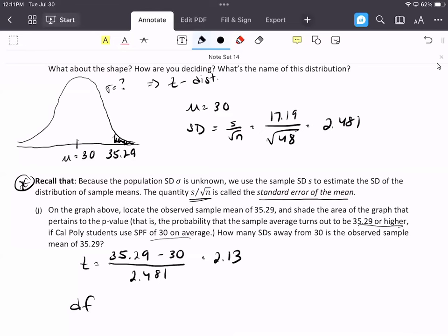With the t, we also need to consider degrees of freedom. df is degrees of freedom, and that's n minus 1. In this case, it's 48 minus 1, which is 47.